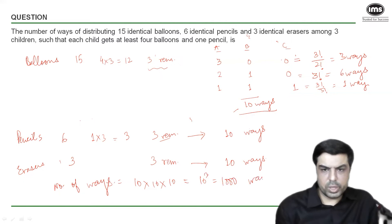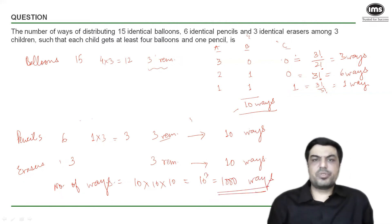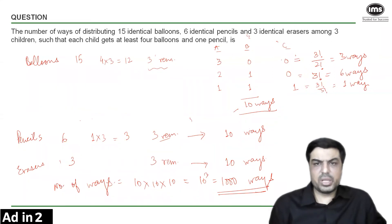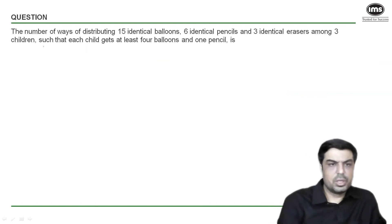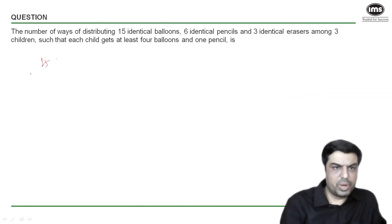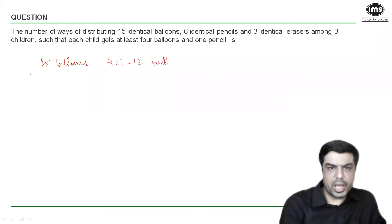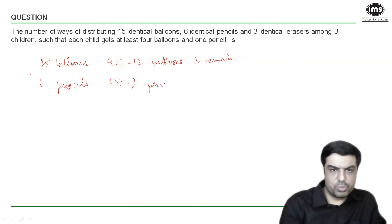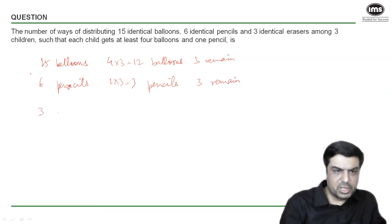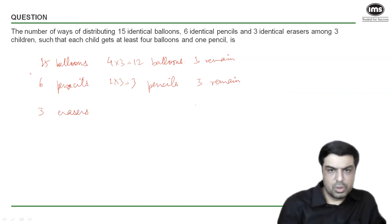That was one way of solving this question by listing the cases. Now let's look at another way using the partition method. Similarly: 15 balloons minus 4×3=12 already distributed leaves 3 balloons remaining. Six pencils minus 1×3=3 already distributed leaves 3 pencils remaining. Three identical erasers with none distributed leaves 3 erasers remaining.